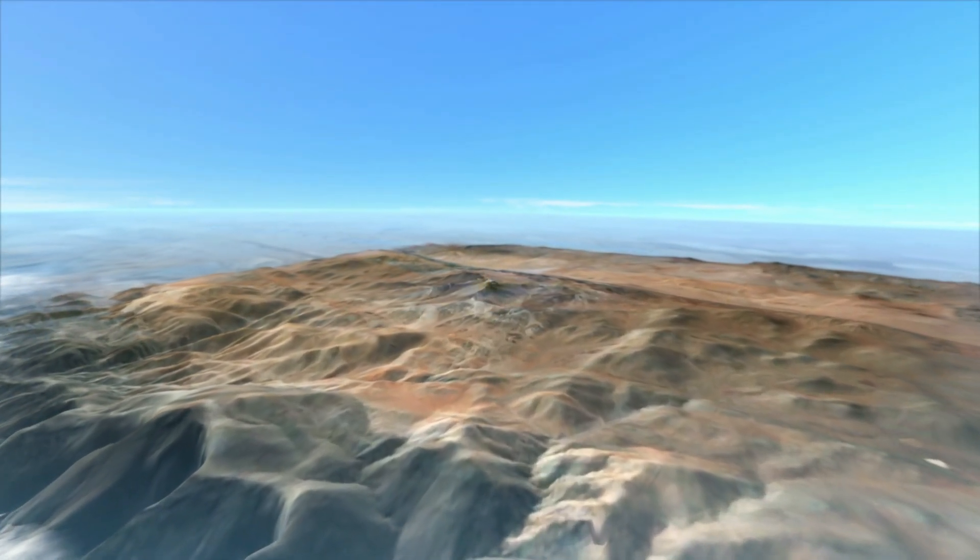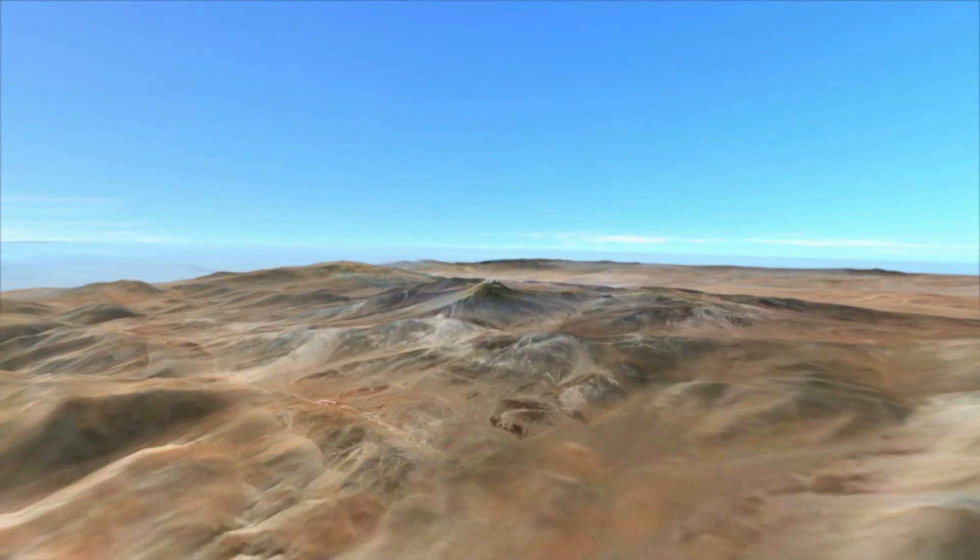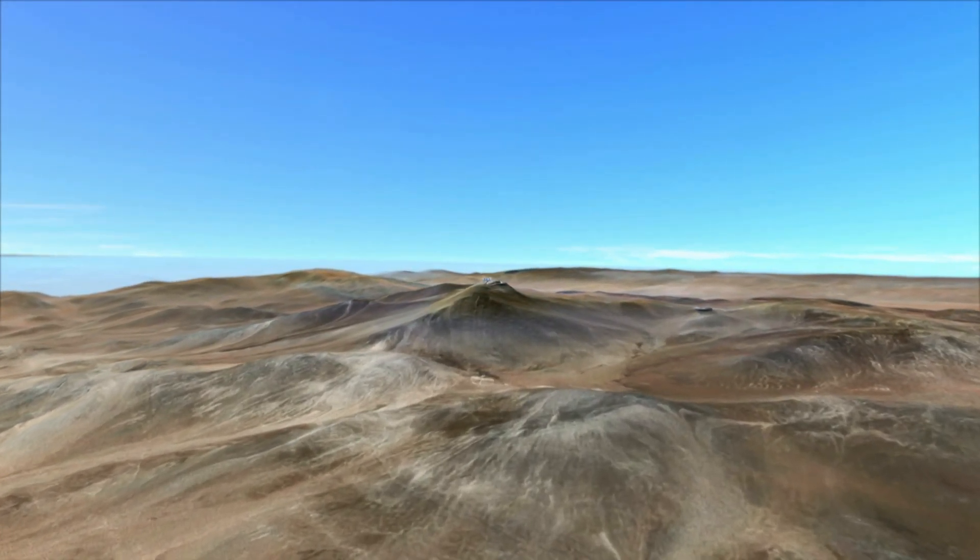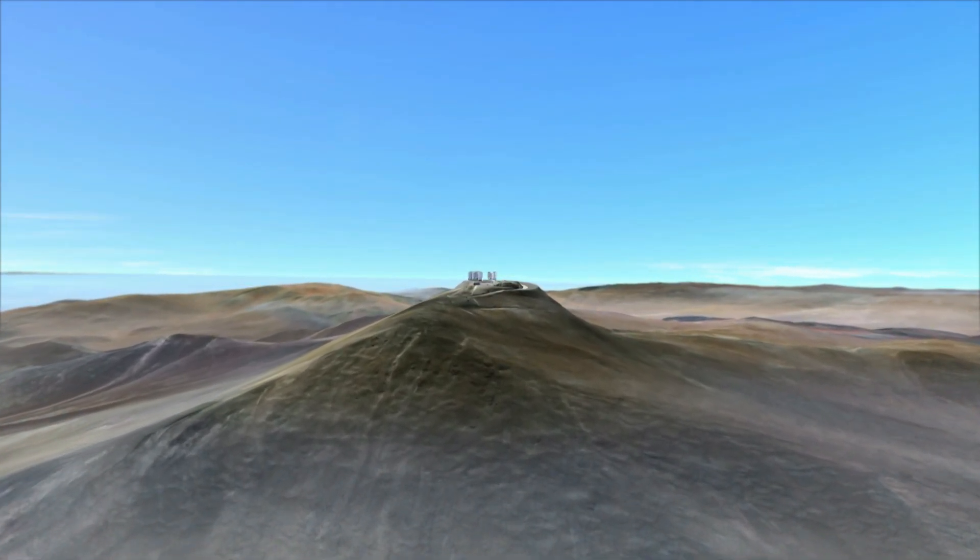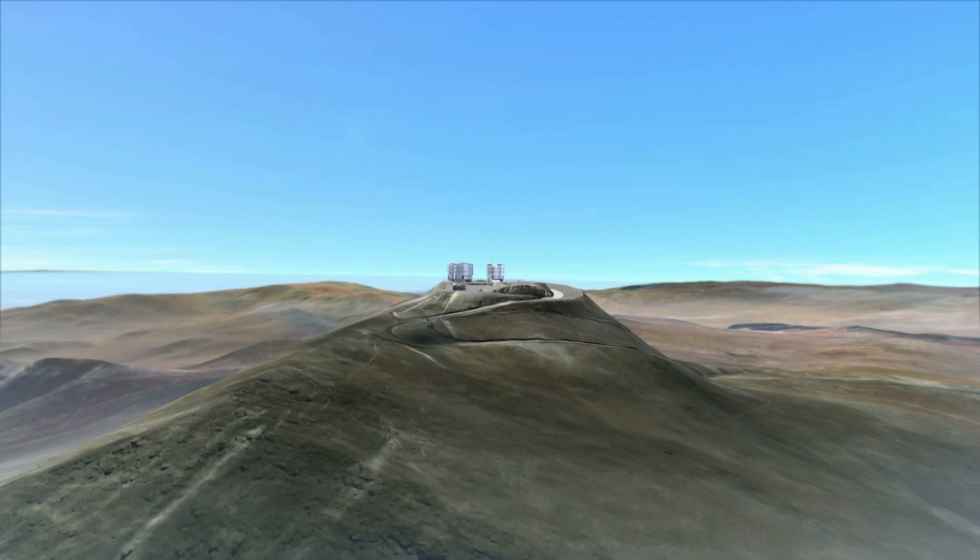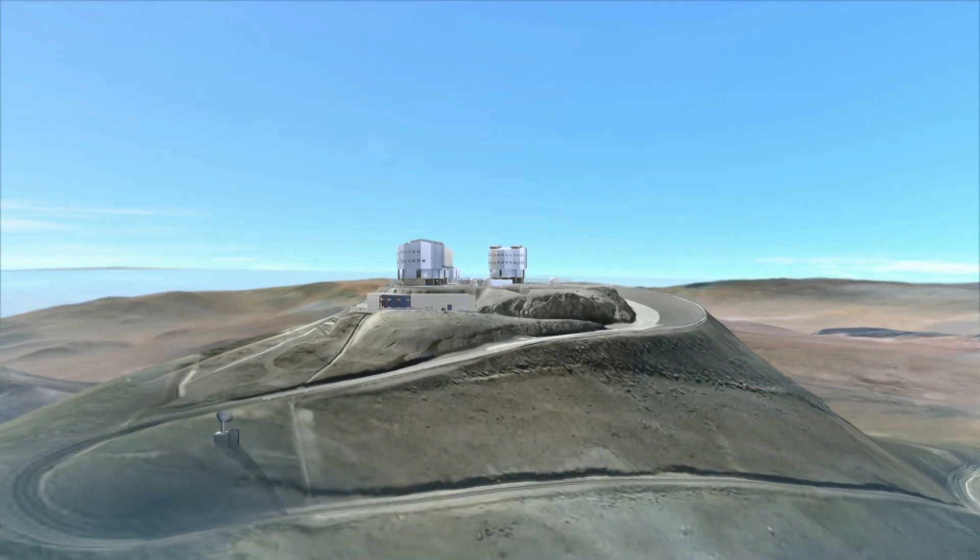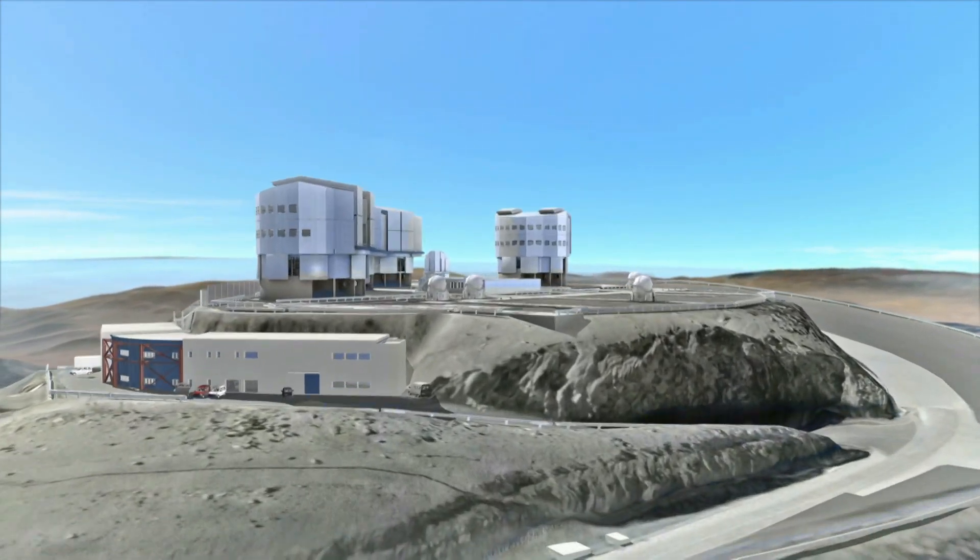Today we have telescopes of many different sizes and shapes. Some are on the ground, like ESO's Very Large Telescope located on a remote 2,600 meter high mountain in the Atacama Desert in Chile. It's seen here in one of the most sophisticated computer models ever made.